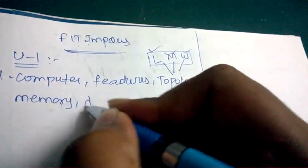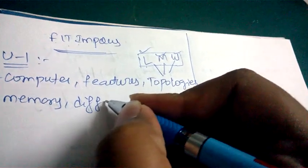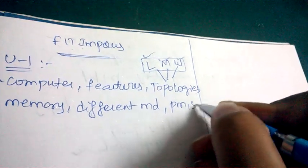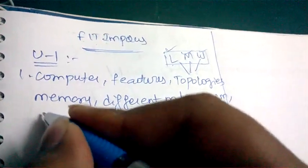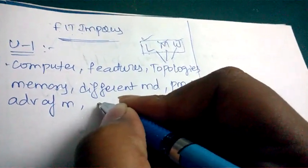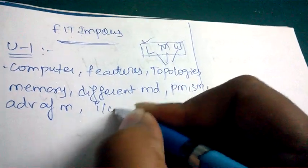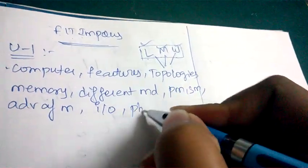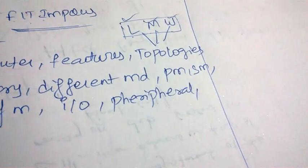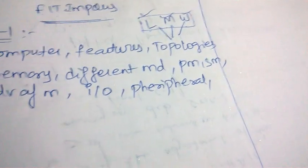Next, define memory: what are the different kinds of memory devices, what is primary memory and secondary memory, and advantages of memory. Also important are input/output devices of the computer and peripheral devices of the computer. Peripheral devices are the devices which are connected to the computer.